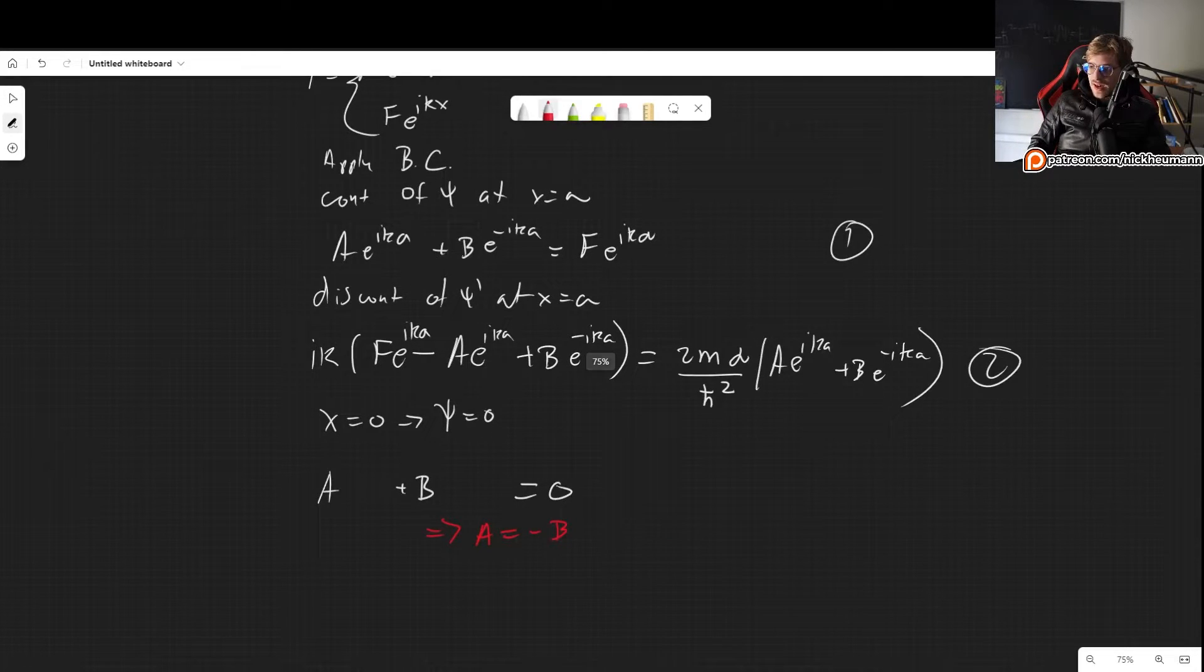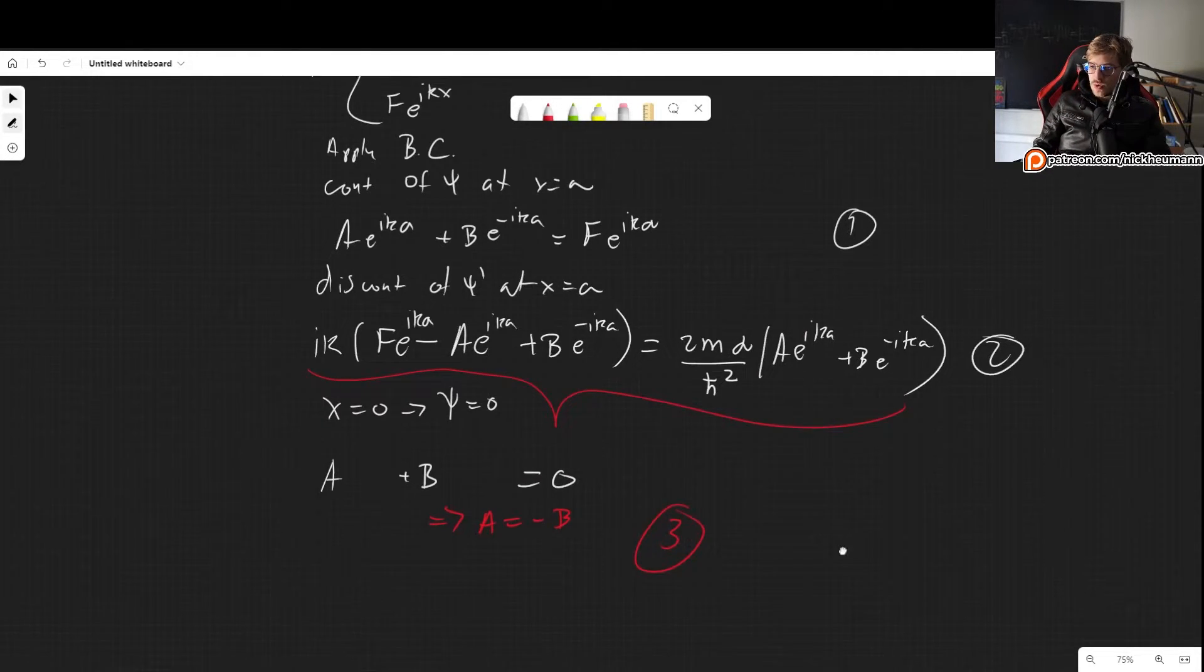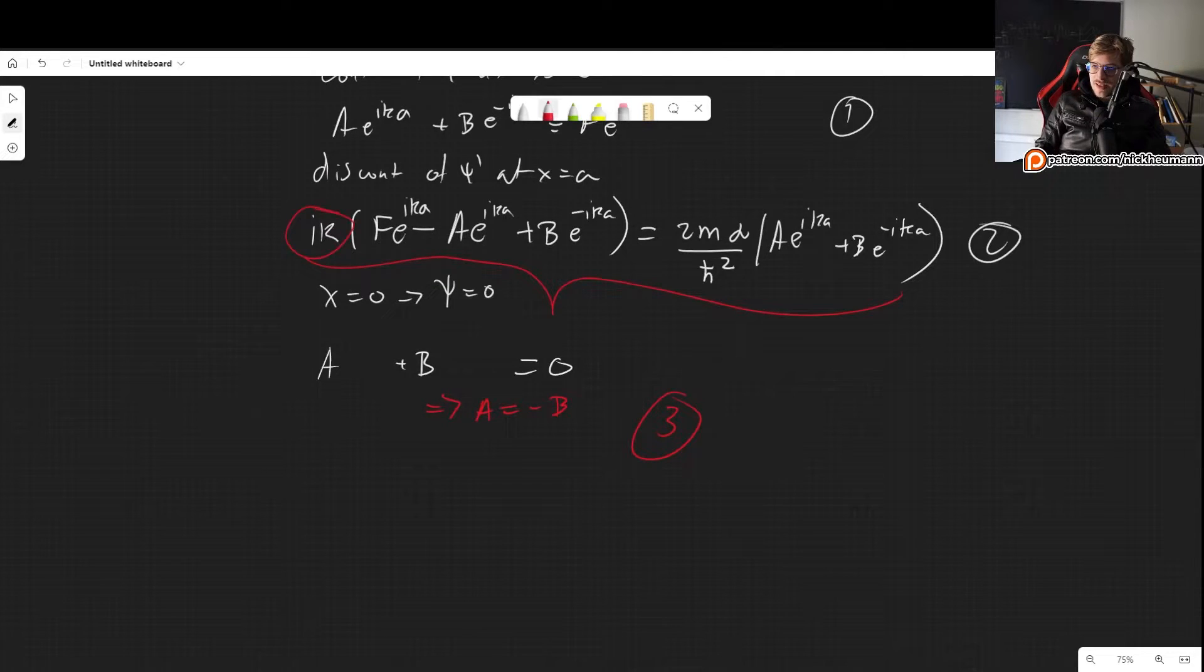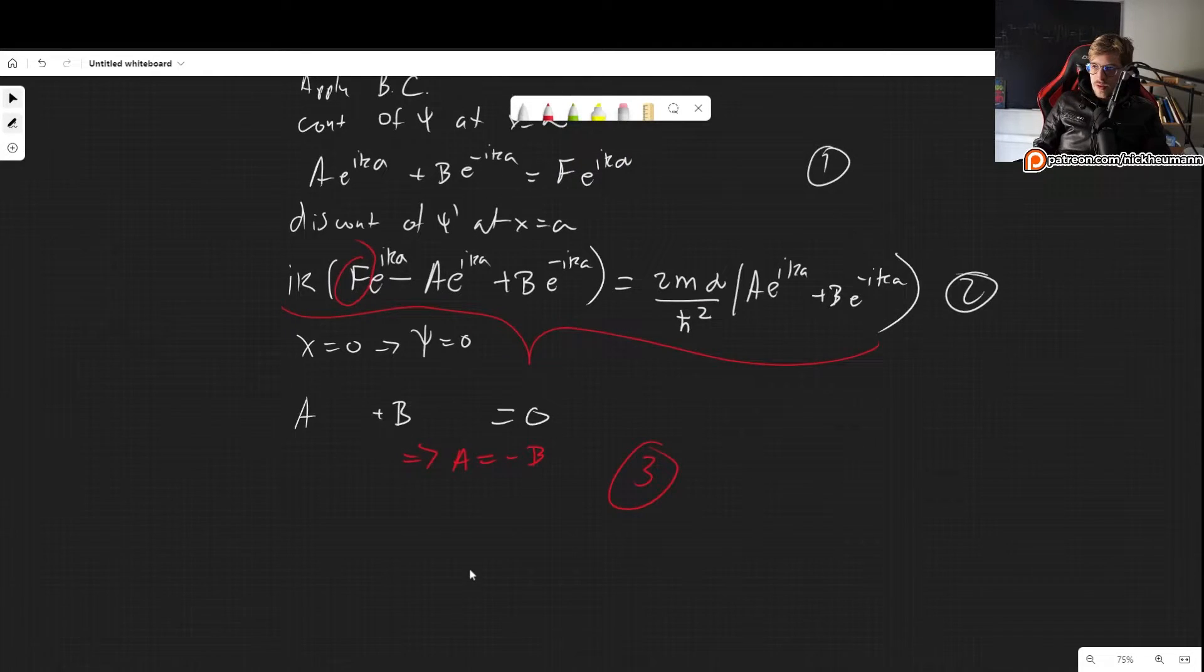and we still need to apply the condition that since there is an infinite potential here, our wave function at x equals 0 must be 0. So at x equals 0, we need our wave function to be 0. So that means that by continuity of the wave function at x equals 0, we need A, e to the i k 0 plus B, e to the minus i k 0. We need it to be 0. Of course, these exponents will be 1.